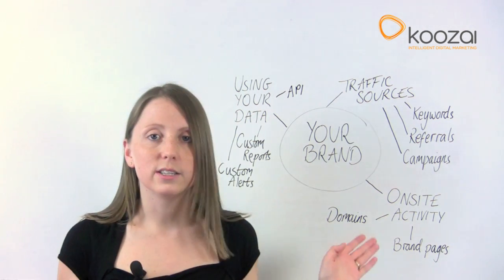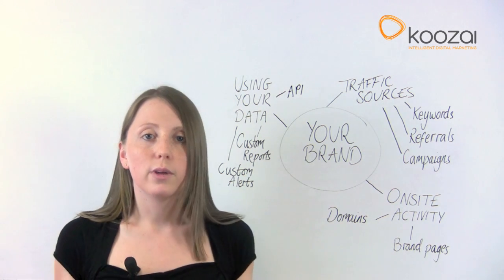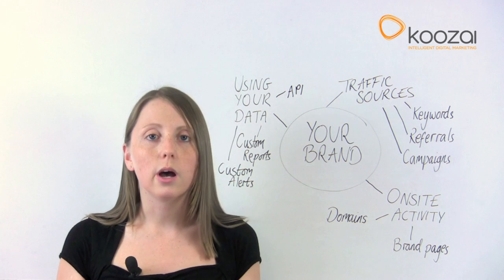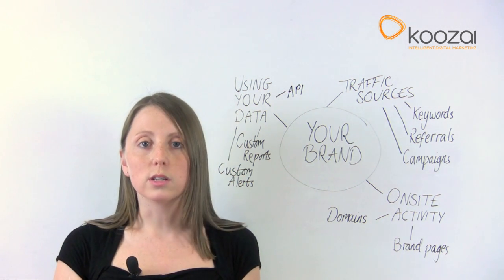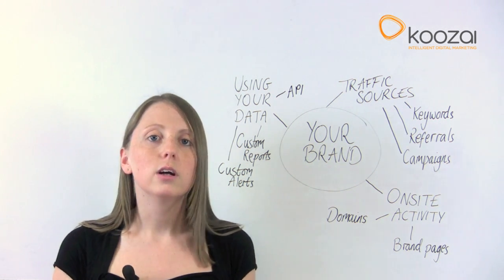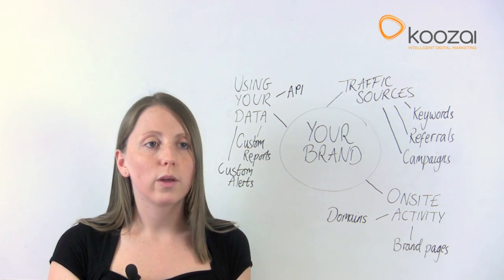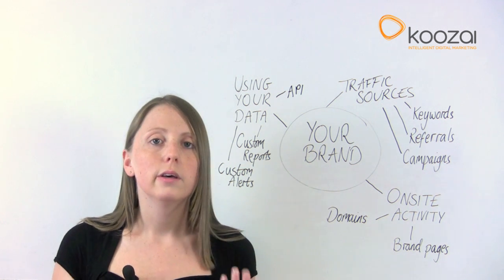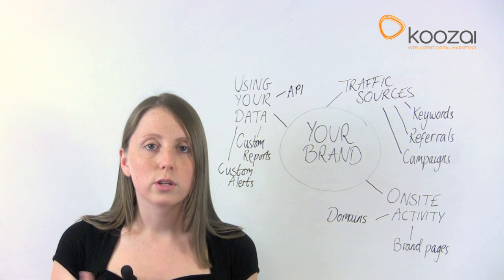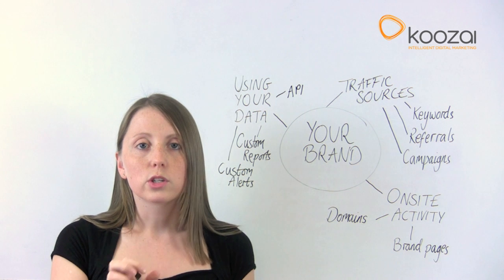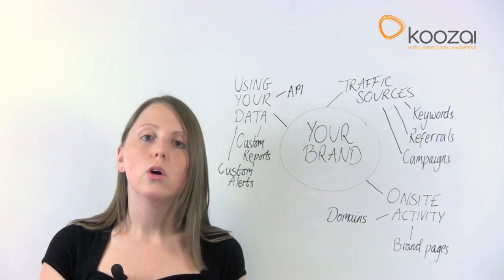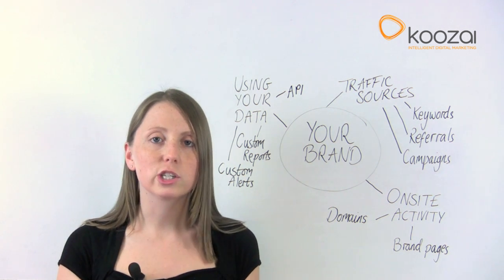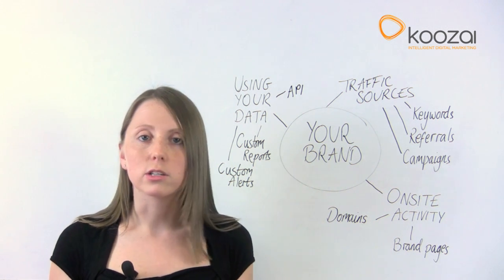Next we're going to look at on-site activity. You've got your users to the site — now what do they do? You'll want to divide your site into sections: which ones are brand-related pages and which ones aren't. Then see how many page views there are per area and compare them. You can see whether brand pages account for, say, 10% of the page views of your whole website in a month. Use the filter box at the bottom in the content drill down report to see how each section is visited across the site in comparison to other sections.